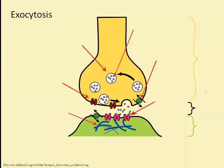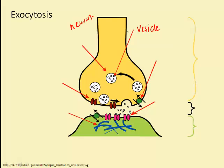Exocytosis is the reverse of endocytosis. In this case, a vesicle fuses with the cell membrane and releases a chemical. In the example shown, we see a nerve cell, or neuron, releasing a neurotransmitter. The purpose of this is to transport the electrical impulse across a gap between neurons.